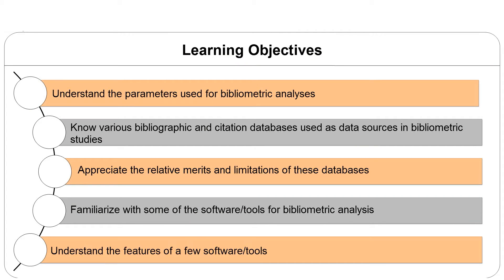The aim of this particular unit is not to make you an expert on any one of these tools, but to make you aware about the possibilities of various sources and tools available for bibliometric studies. After completing this module, you will be able to understand the parameters used for bibliometric analysis, know various bibliographic and citation databases used as data sources, appreciate their relative merits and limitations, and familiarize yourself with some software tools for bibliometric analysis.